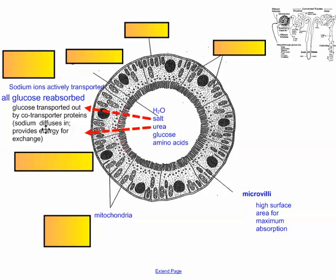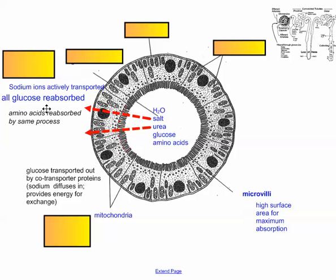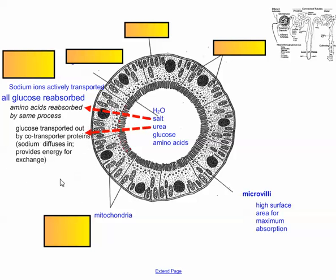So the mitochondria are going to provide all the ATP necessary to do this active transport out. Glucose is special in this point. Glucose is transported out by co-transporter proteins. They're just proteins that are in the plasma membrane that trade things. So sodium for glucose, you can think of it like that, and it creates energy for that particular process. Amino acids are also reabsorbed by the same process.